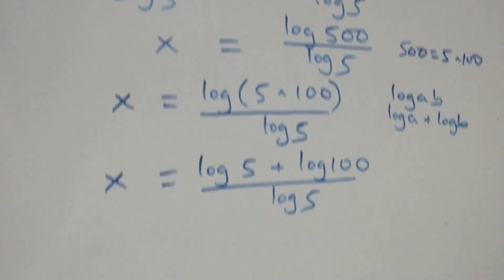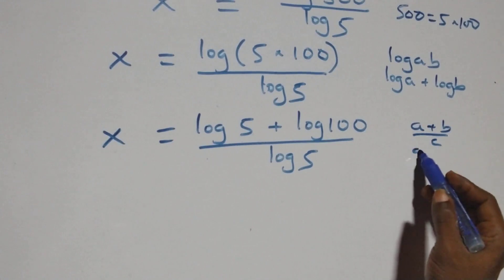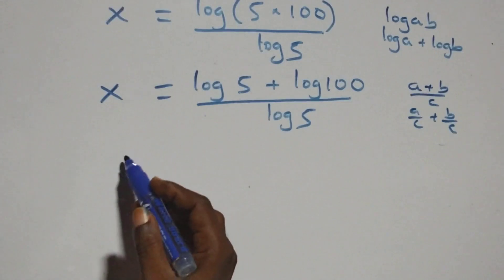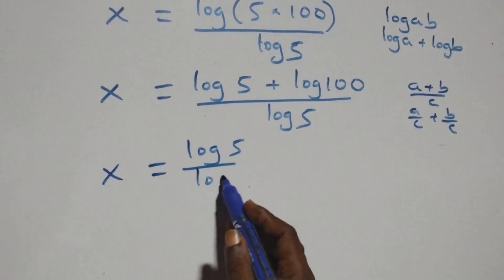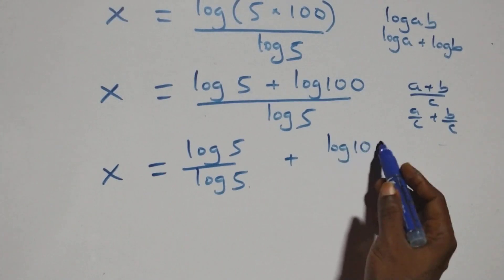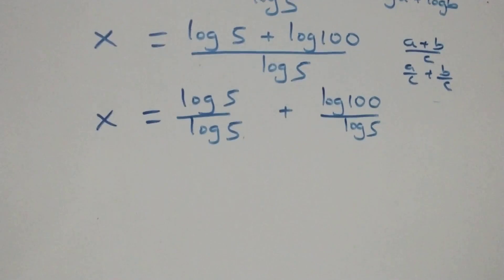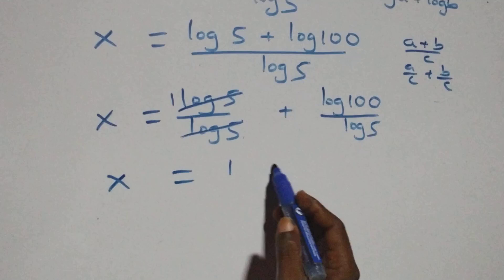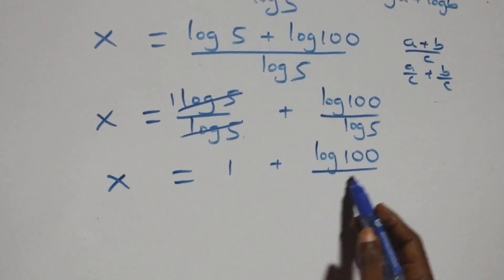Here we separate this into two fractions. We have a plus b over c written as a over c plus b over c. So this becomes x equals to log 5 over log 5 plus log 100 over log 5. Since log 5 over log 5 cancels to give 1, we have x equals to 1 plus log 100 over log 5.